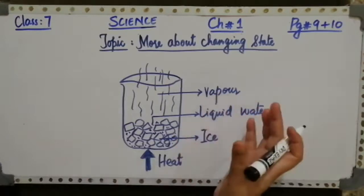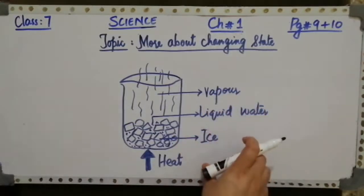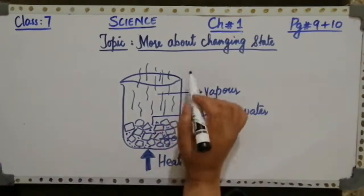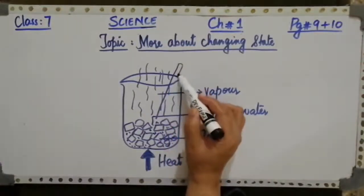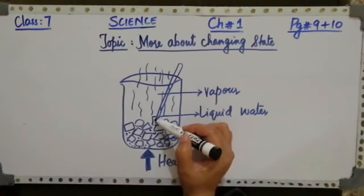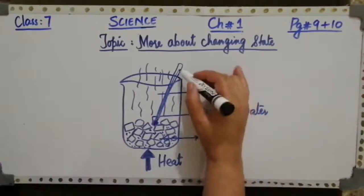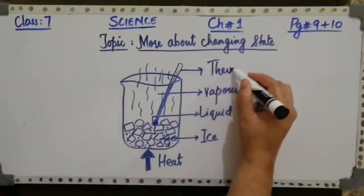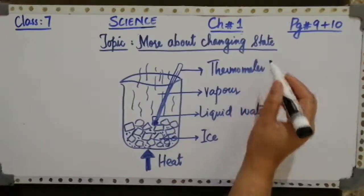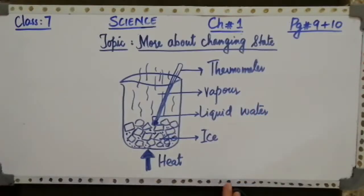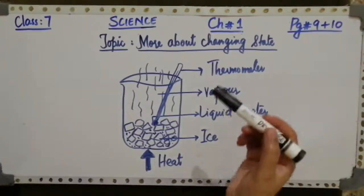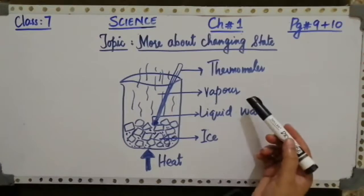So what you are observing in this activity is that ice, after getting heat, changes into liquid water, and when the temperature is increased, this liquid water changes into vapors and begins to boil. The temperature is taken every 30 seconds from start to finish. For this purpose you need a thermometer, which will be inserted inside the beaker so you can record your temperature.